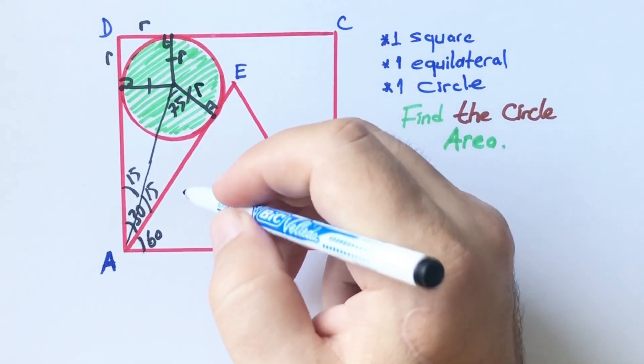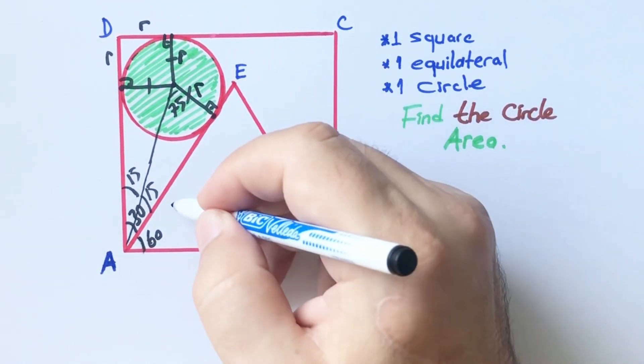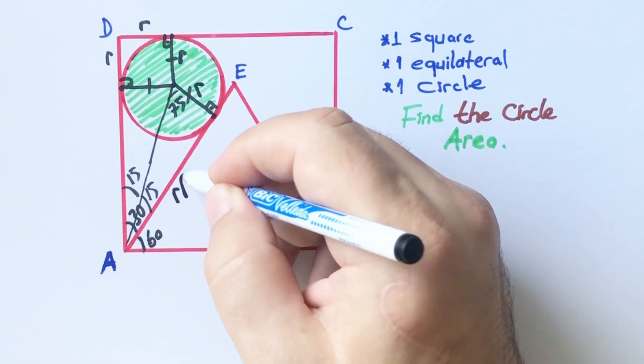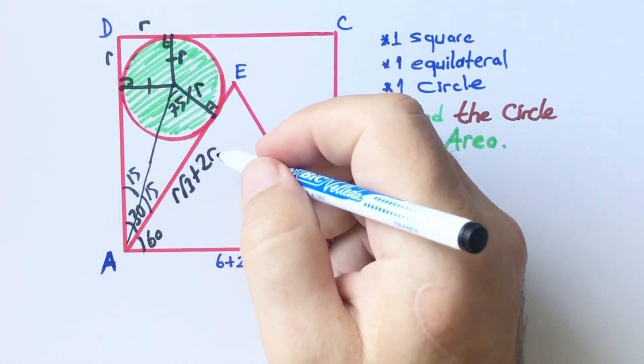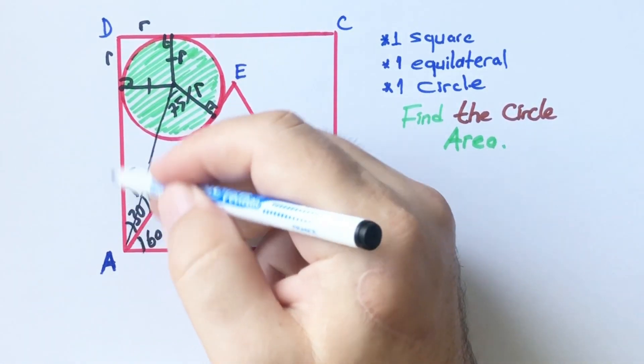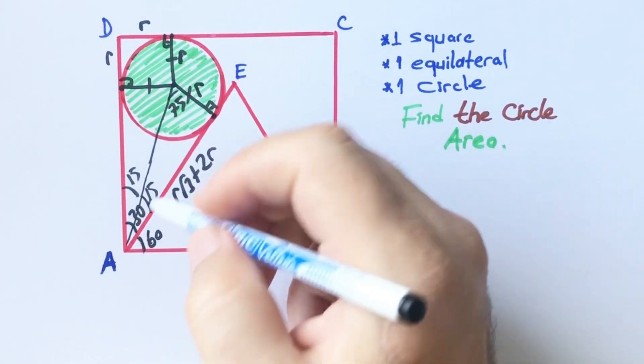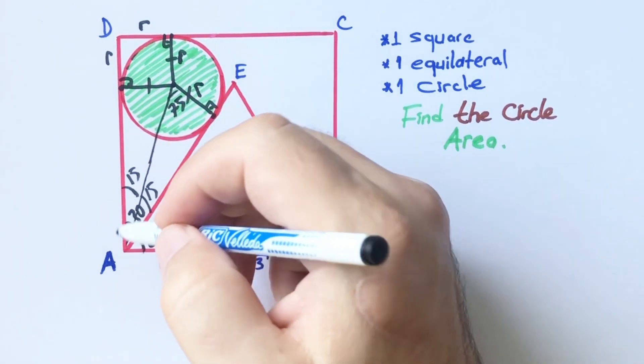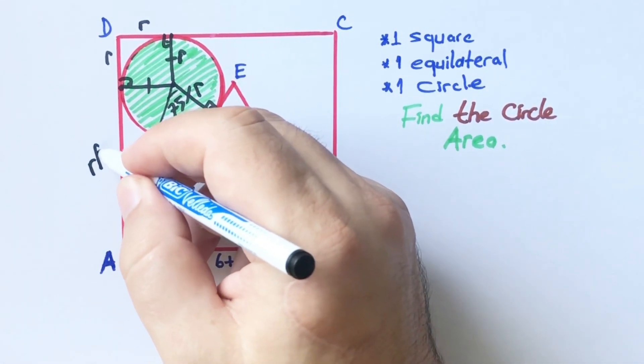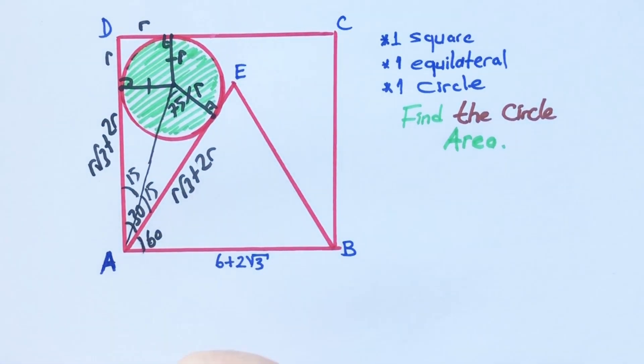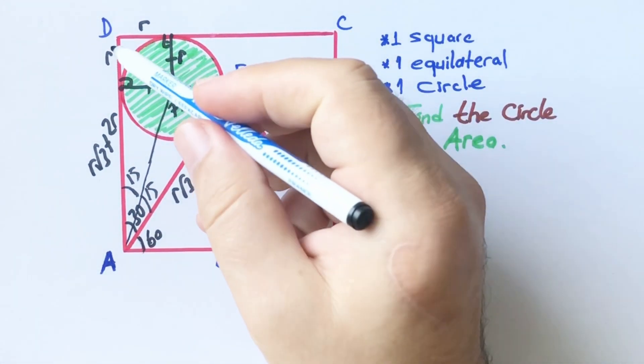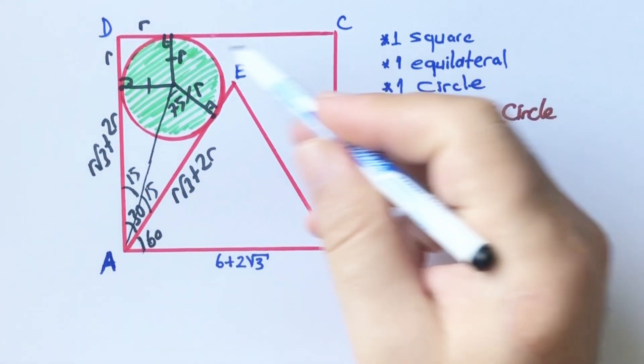If there is r units across the 15 degrees, across the 75 degrees must be r√3 + 2r. And this length is also r√3 + 2r.